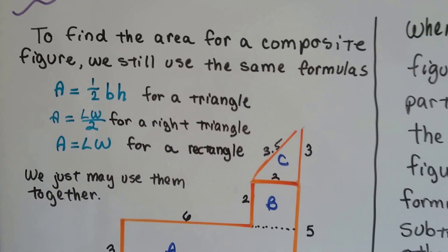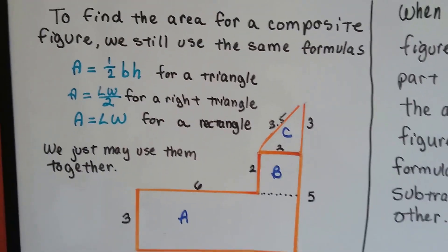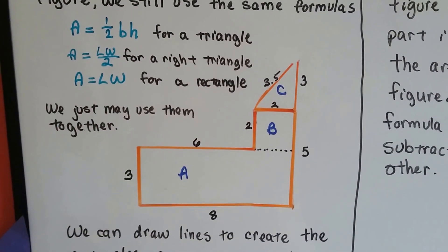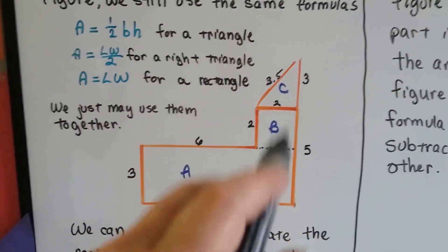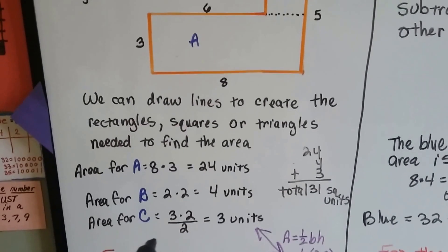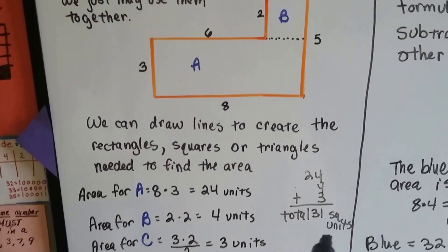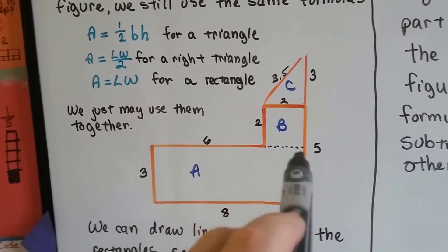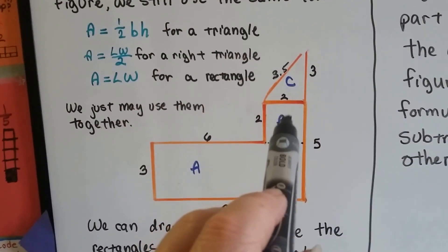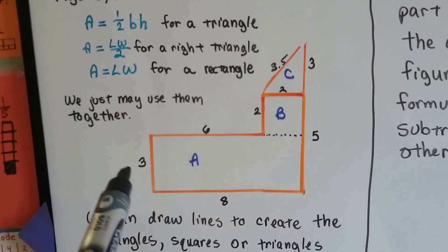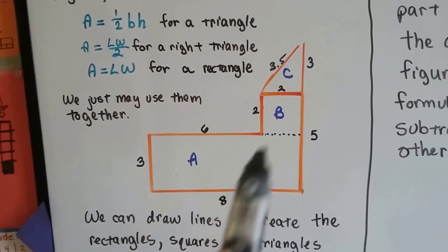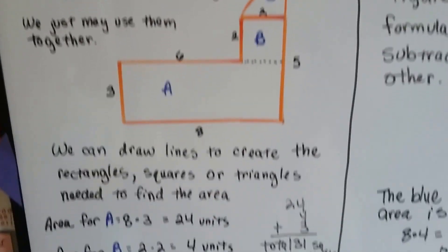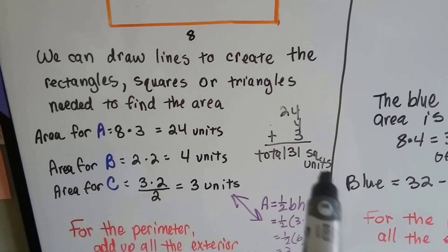And we said that we could find the area for a composite figure by using the same formulas that we always use to find area. For this figure, in the last video, we found out that the area was 31 square units. We broke it into sections by drawing dotted lines that created a square that was 2x2 and a rectangle that was 3x8 and this little triangle. We found the area for each, totaled them all up and got our total square units.